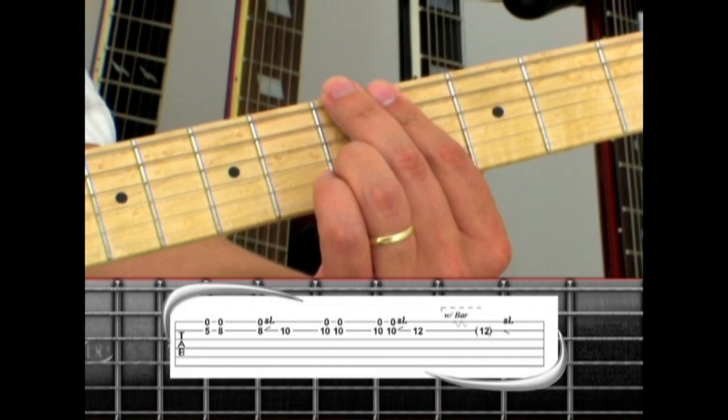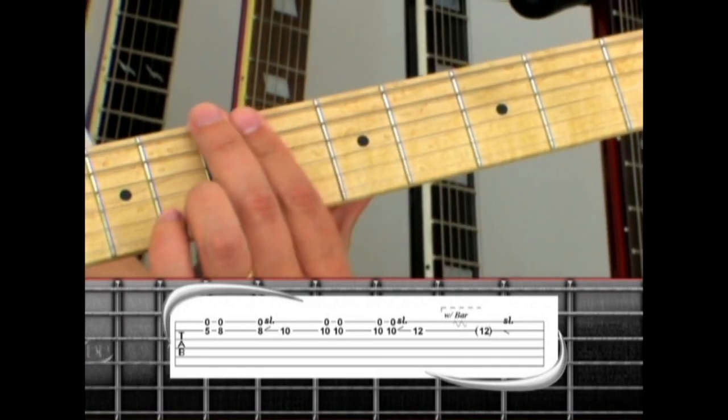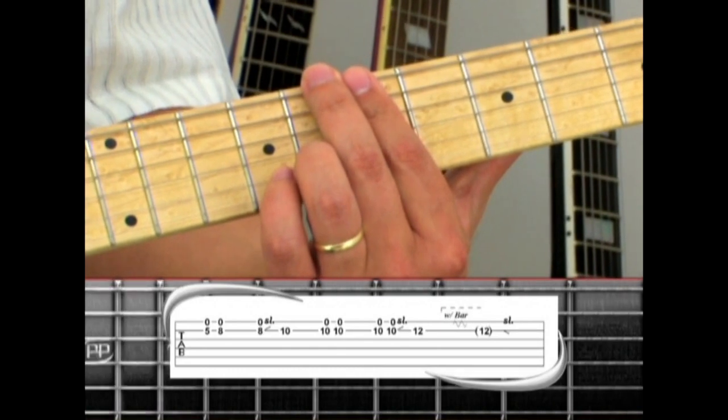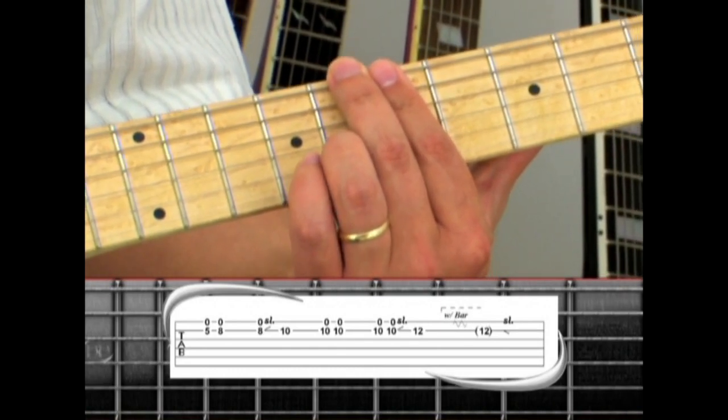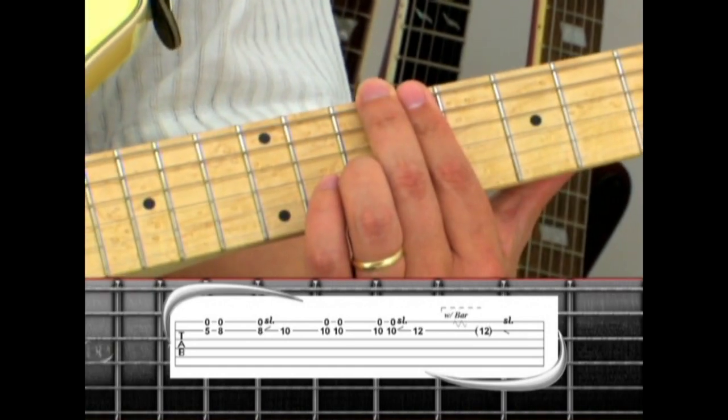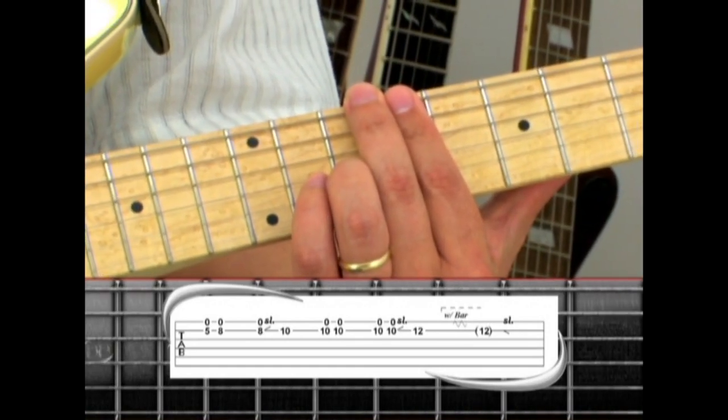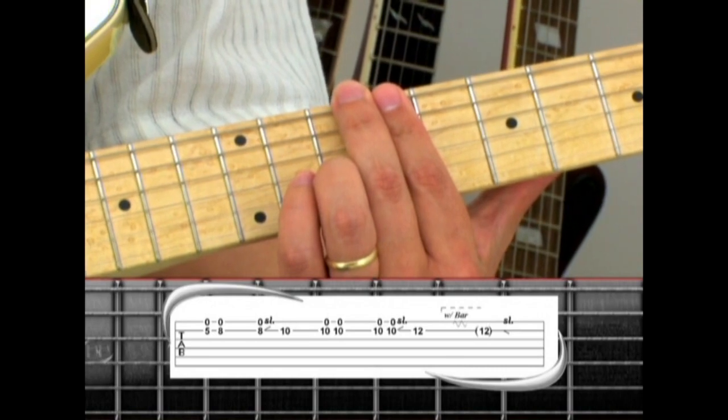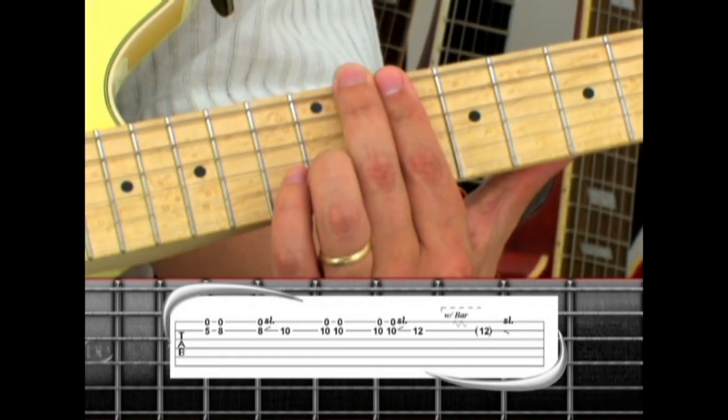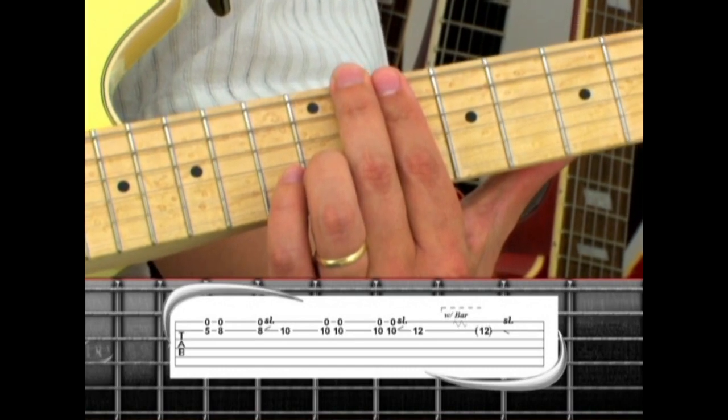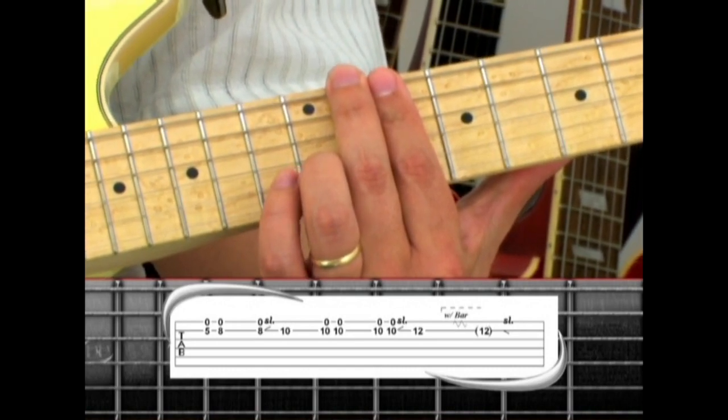Fifth fret, then play the same thing on the eighth fret. Second string eighth with the first string open. Eighth fret again and slide up to ten. Double pick ten, double pick ten again and slide to twelve. Add some light dips on the whammy bar, then slide down the neck.